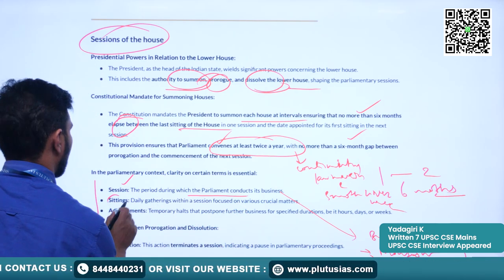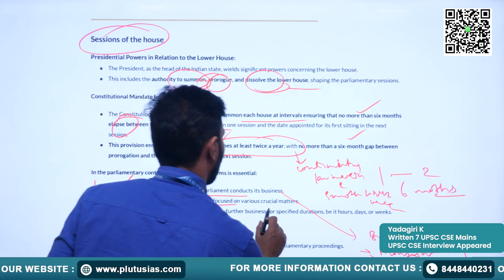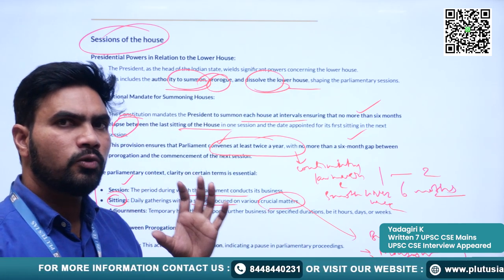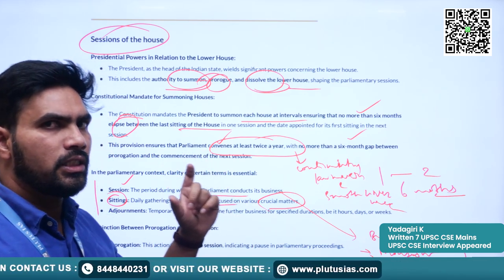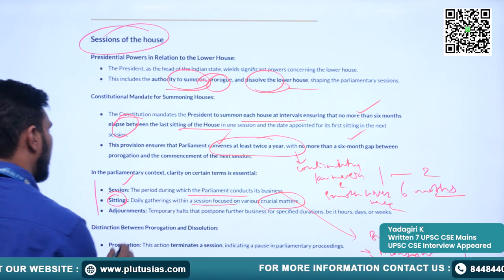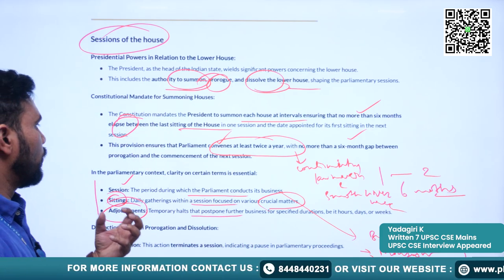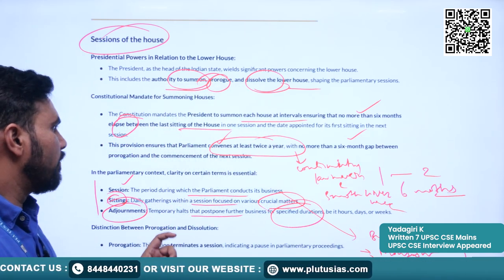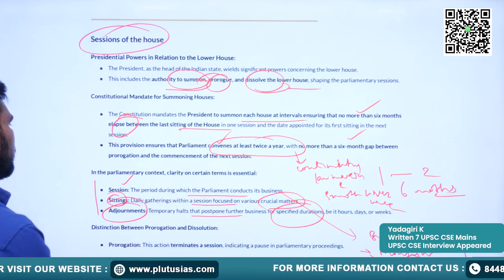A sitting refers to daily gatherings within a session focused on various crucial matters, where members assemble and discuss legislative proposals. Adjournment is a temporary halt that postpones further business for specified durations — it can be hours, days, or even weeks.